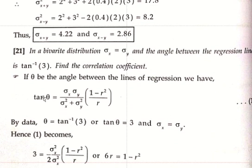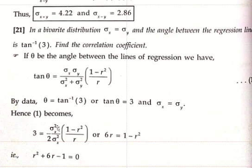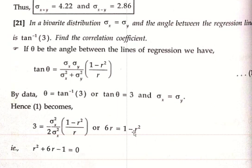Since sigma x equals sigma y, equation 1 becomes: 3 equals sigma x into sigma x over sigma x squared plus sigma x squared, into 1 minus r squared over r. That is sigma x squared over 2 sigma x squared, into 1 minus r squared over r. Sigma x squared cancels, leaving 1 over 2r. Cross multiplying: 6r equals 1 minus r squared. Rearranging: r squared plus 6r minus 1 equals 0.